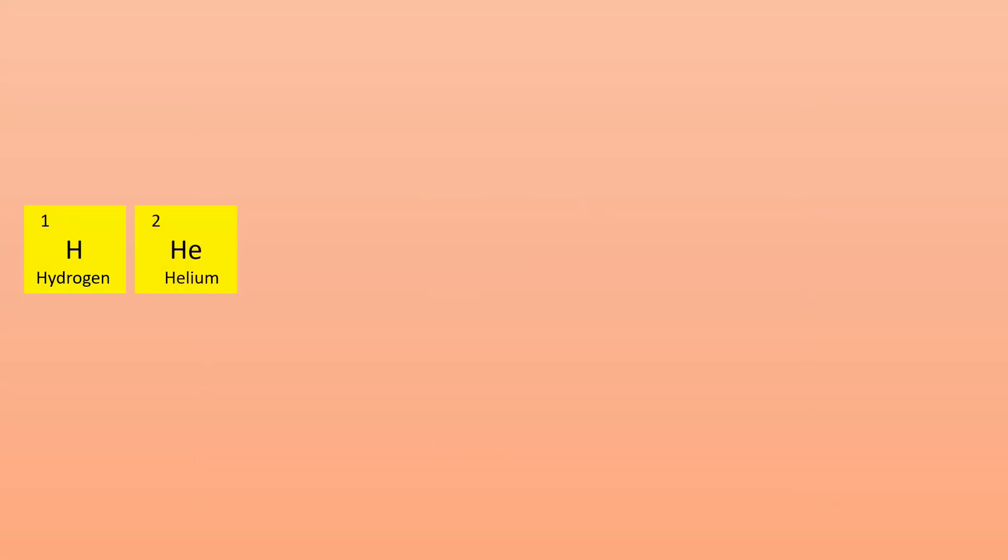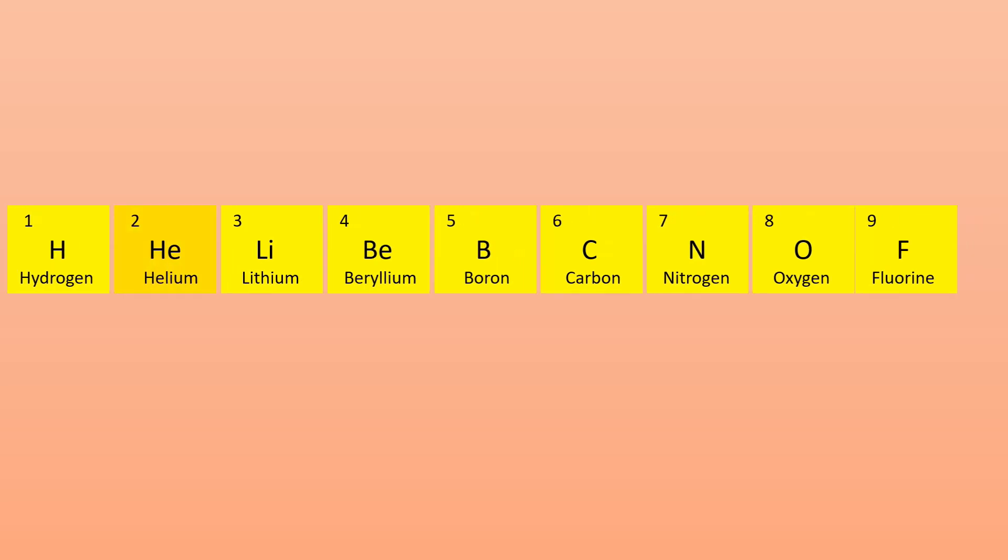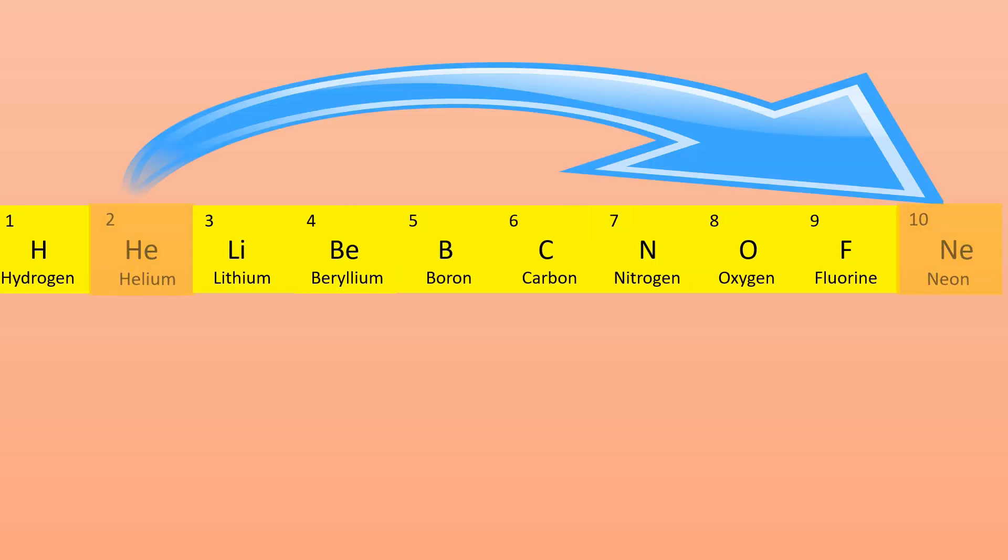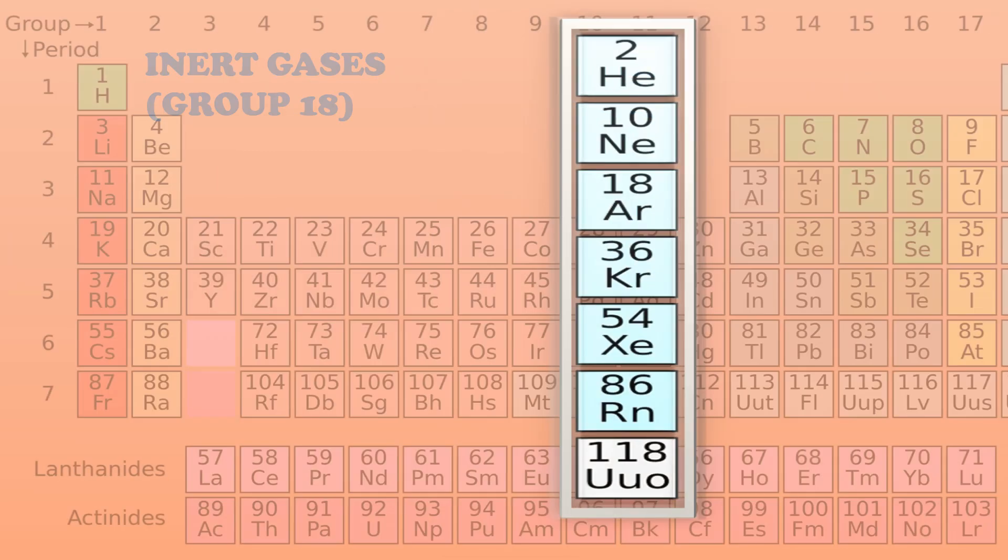If we arrange the elements in the increasing order of their atomic number, a periodicity arises, which means there is a repetition of elements with similar chemical properties. For example, after a few elements, noble gases appear.